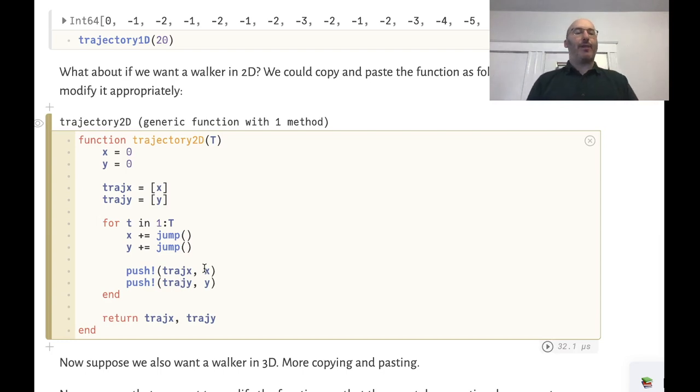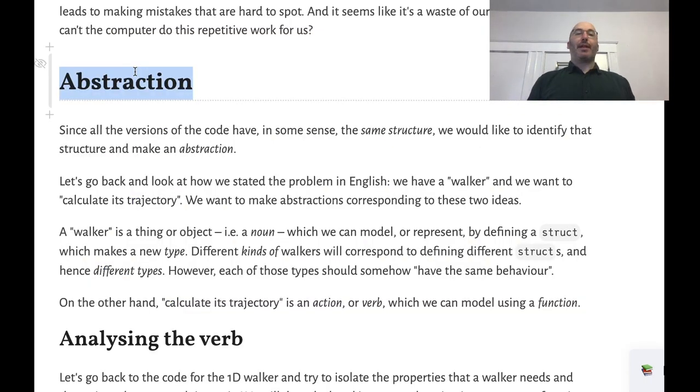So what we need to do is analyze the function and see what is it actually doing and try and break it down into smaller pieces which we can then define for each different situation that we want to study. Basically the idea is to write the code only once and reuse it in different situations. We can think of this as making it an abstraction, the underlying structure of this function.